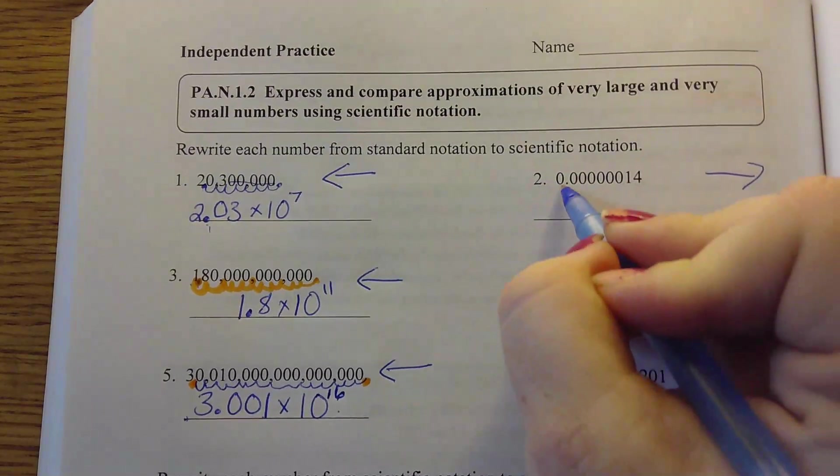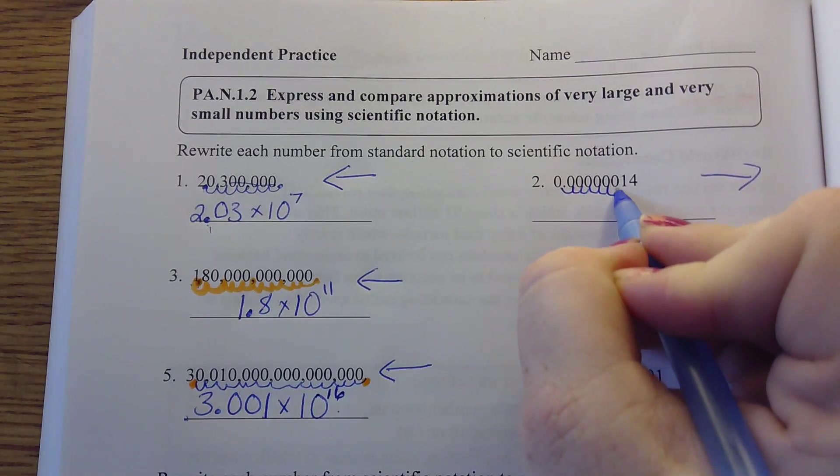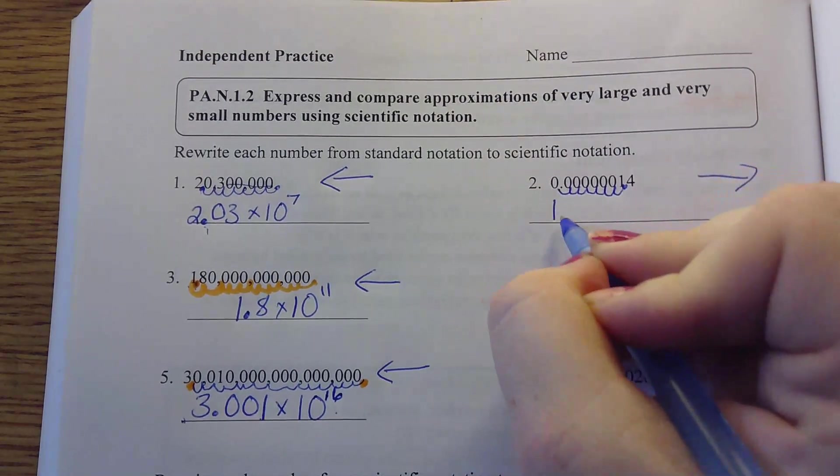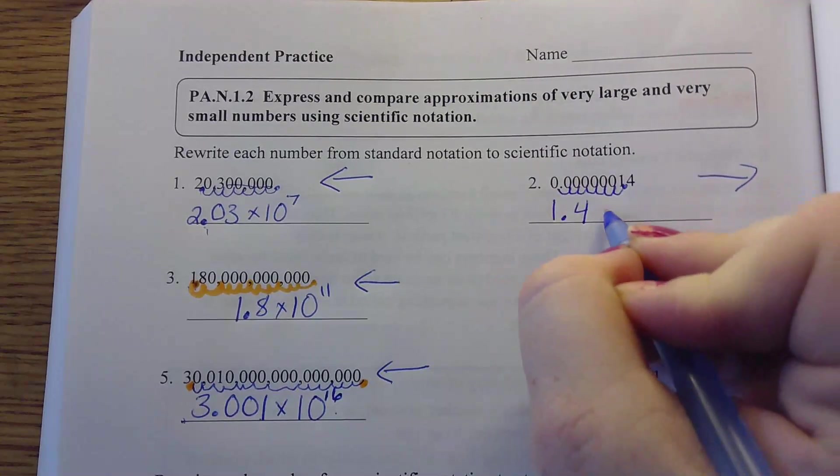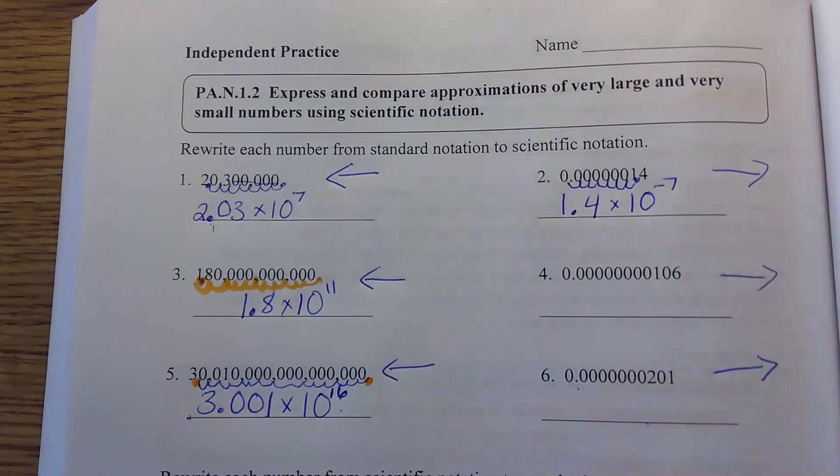So here, I'm going to move it 7 times. So we're going to have 1.4 times 10 to the negative 7.